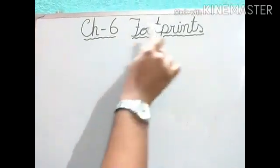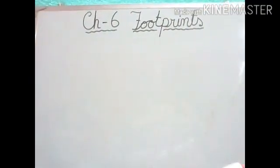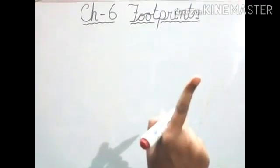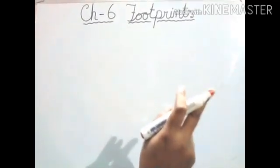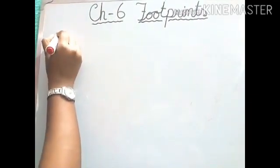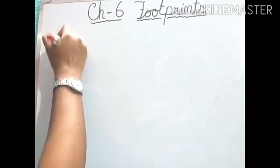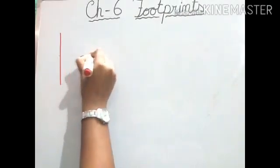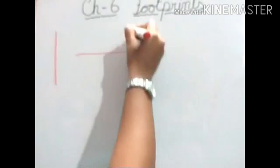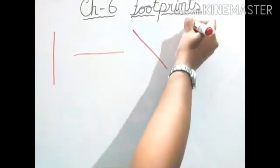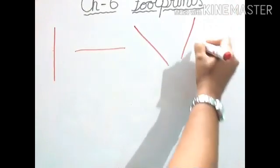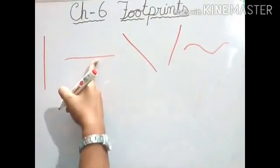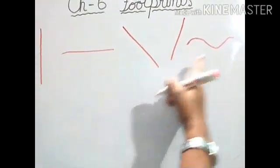So in Chapter 6, Footprint, I have shown you some shapes. Now, how to draw the shape with the lines which we have done in Chapter 11. What type of lines? Like first we have done one standing line. Next, what we have learned? One sleeping line. Then slanting line like this or like this. And the next, curve. Standing line, sleeping line, slanting line, or curve line.